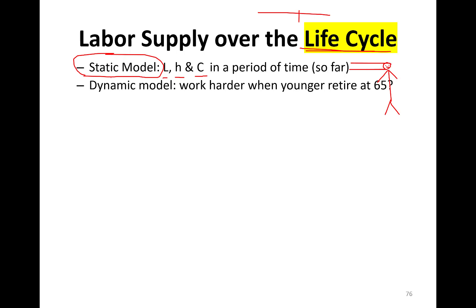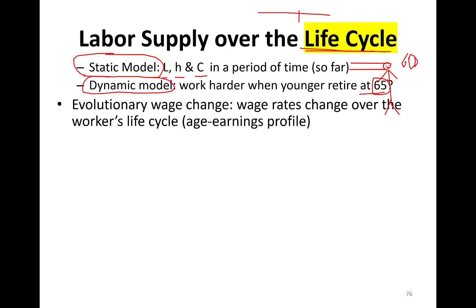Dynamic models are a little bit different and more realistic. You will work harder when you're younger and retire at maybe 65 — although if you're born after 1960, the full retirement age is now 67. So for all of us born much later than 1960, our full retirement age is 67 in terms of Social Security. We'll cover that in future chapters. We'll talk about evolutionary wage change, which basically means wage rates change over the worker's life cycle. This generates what we call an age earnings profile.